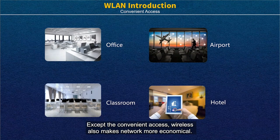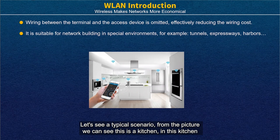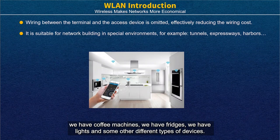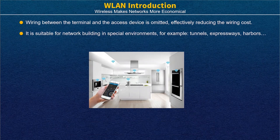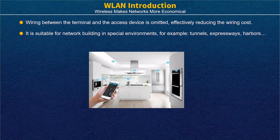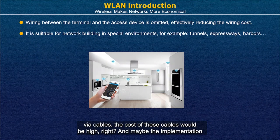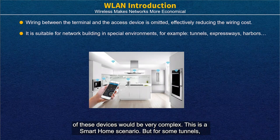Except for convenient access, wireless also makes the network more economical. Let's see a typical scenario. From the picture, we can see this is a kitchen. In this kitchen we have coffee machines, a fridge, lights, and some other different types of devices. All these devices can be controlled by an app on the mobile — this is a smart home solution. Without WLAN, we would need to connect each device via cables, and the cost of these cables would be high, and the implementation could be very complex.